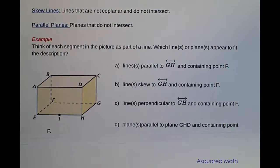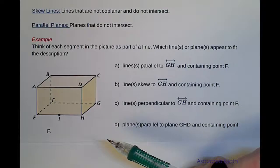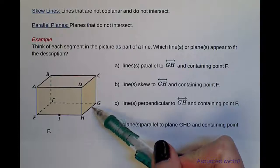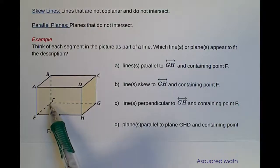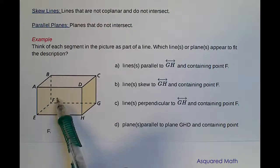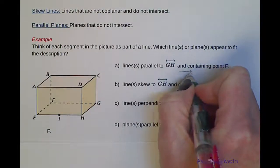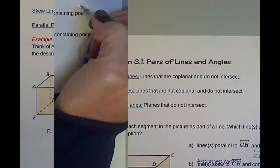We're going to have this box and the first thing we want to do is identify the line or lines that are parallel to line GH and contain the point F. Well, GH is this line here and we need something that is parallel and contains point F. Point F is over here, so a line that would be parallel to GH would be line EF. The symbol for a line is that double arrow, and we'll put our points E and F in there.